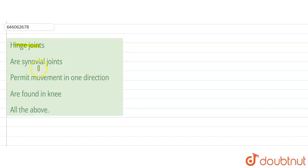Hinge joints, and the options are: are synovial joints, permit movement in one direction, are found in knee, and all of the above. So basically, hinge joints...